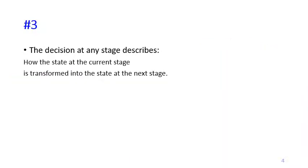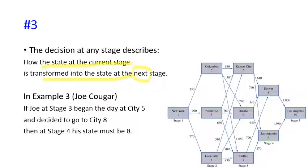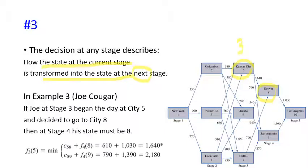What is a decision technically in dynamic programming? The decision at any stage describes how the state at the current stage transforms into the state at the next stage — a decision will change your condition. For example, if at stage 3 Joe began at city 5 and decided to go to city 8, his state changes from Kansas City at the beginning of day 3 to Denver at the beginning of day 4. The decision is reflected in the change of state.